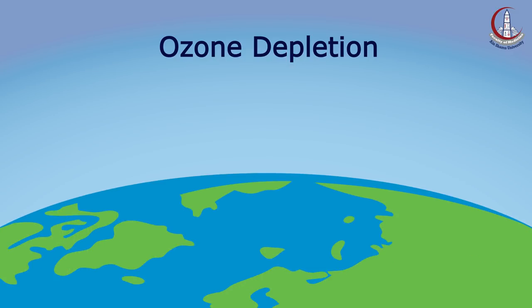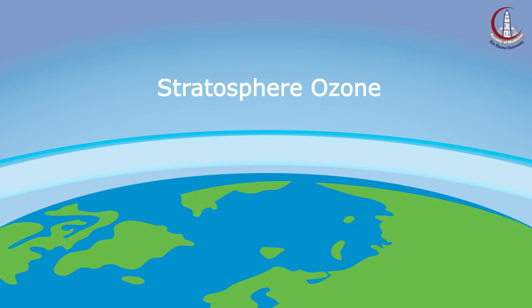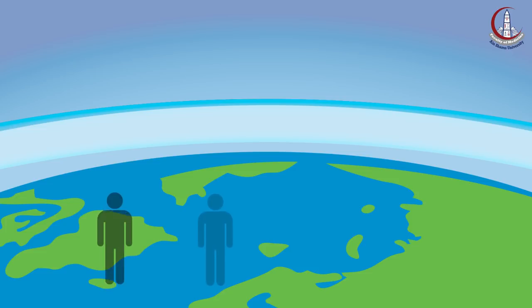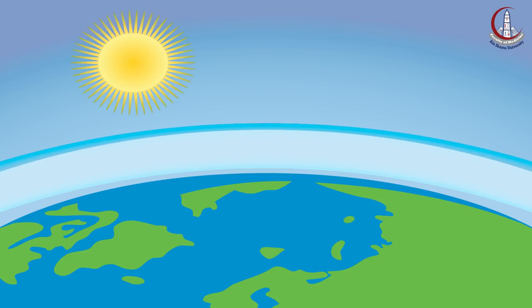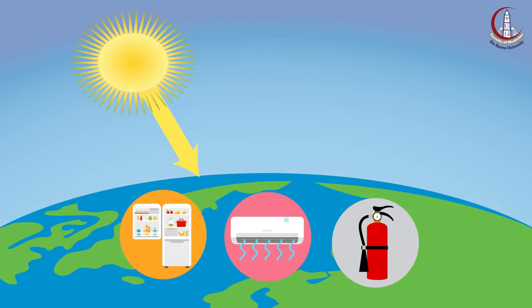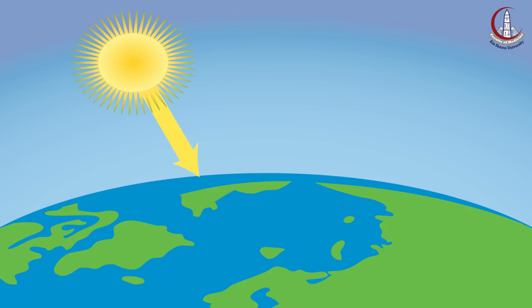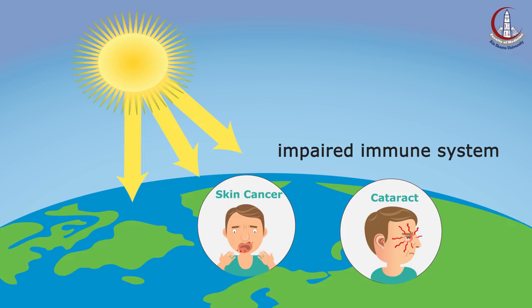Ozone is a gas that occurs both at the ground level and in the earth's upper atmosphere, known as the stratosphere. At ground level, ozone is a pollutant that can harm human health. In the stratosphere, however, ozone forms a layer that protects life on earth from the sun's harmful ultraviolet rays. But this good ozone is gradually being destroyed by man-made chemicals referred to as ozone-depleting substances. Thinning of this protective ozone layer can cause increased ultraviolet radiation, leading to more cases of skin cancer, cataracts, and impaired immune systems.